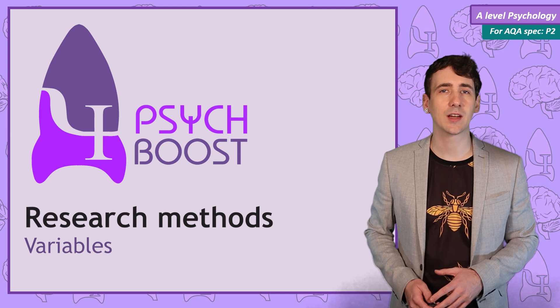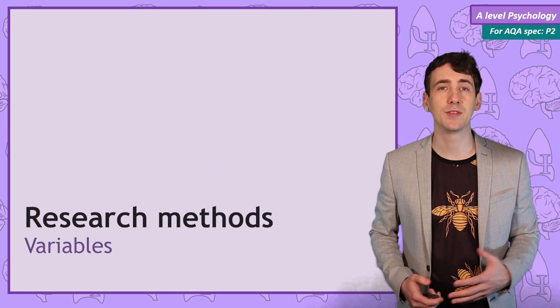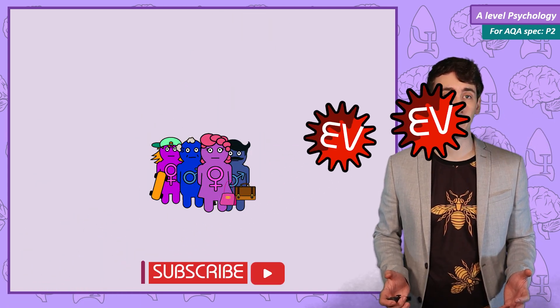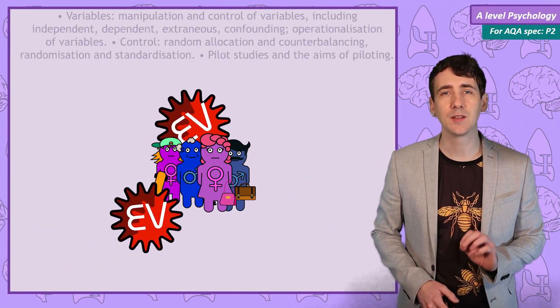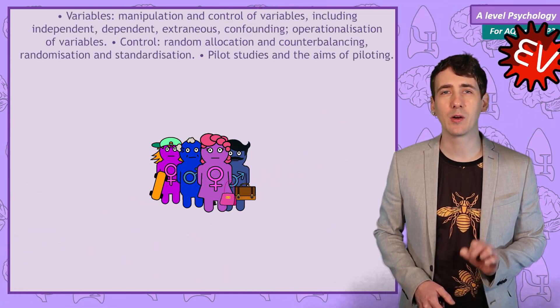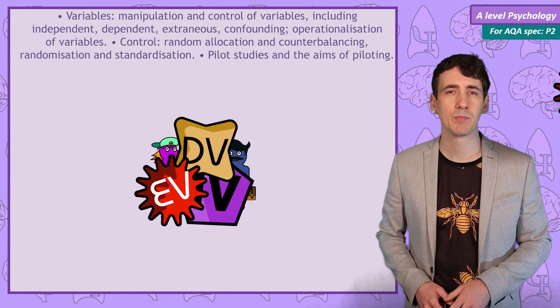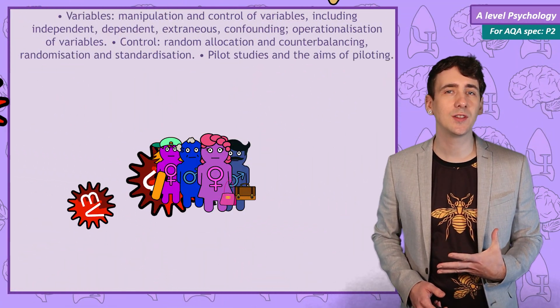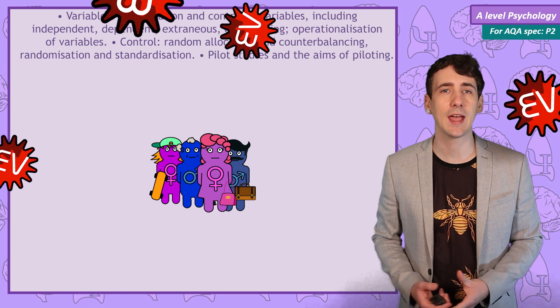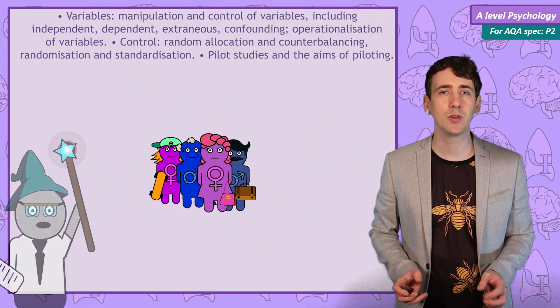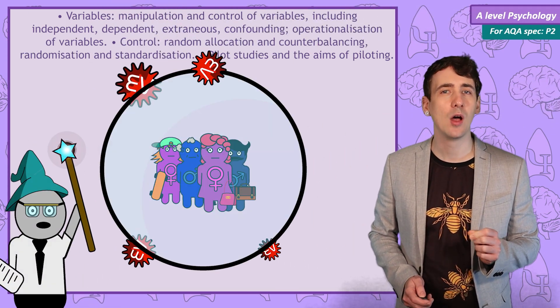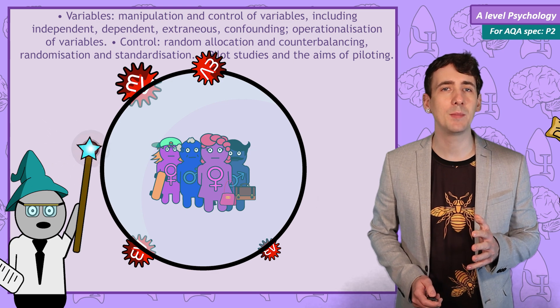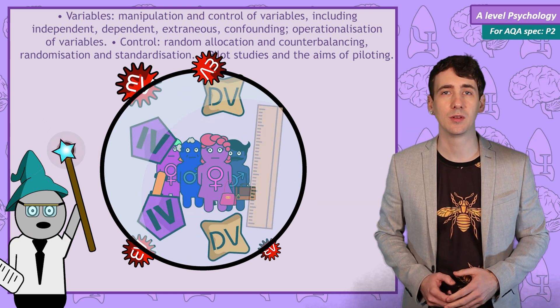This research methods and psychology video covers variables. The world is chaotic — lots of things change or vary, and some things might directly cause other changes, but it's hard to see in all the chaos. In an experiment, researchers attempt to hold most variables the same, all while manipulating and measuring other variables.